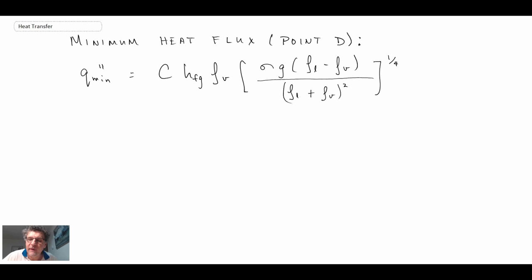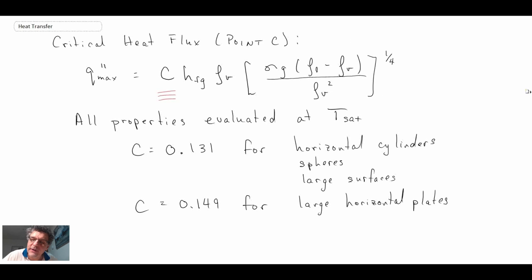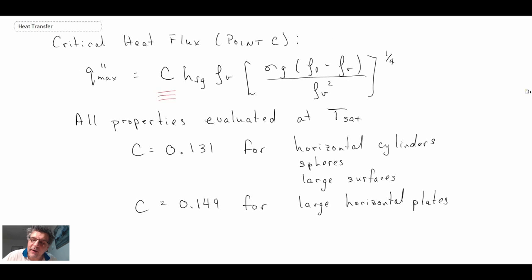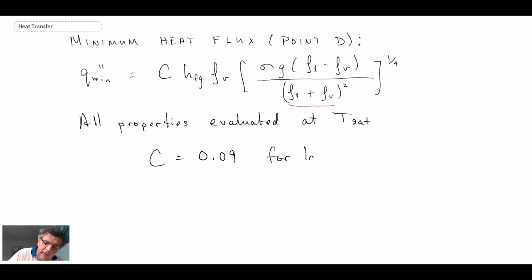So this is the equation that we have for the minimum heat flux. And if you compare this to the max heat flux, the equations look very, very similar. The only thing different is, with the minimum heat flux, we're dividing by the sum of the liquid density and the vapor density, and then squared. And however, it is a little bit more restrictive in terms of the types of shapes that it applies to. As before, all properties are evaluated at T-SAT. And the equation, the value of C is 0.09, and that is for large horizontal plates.